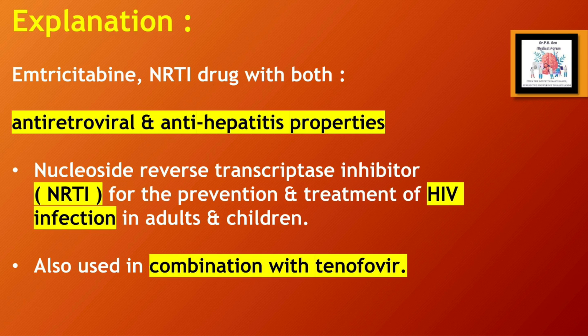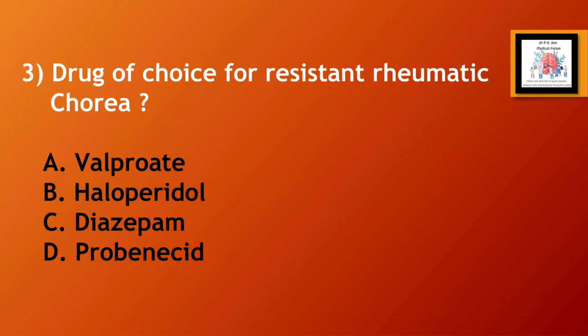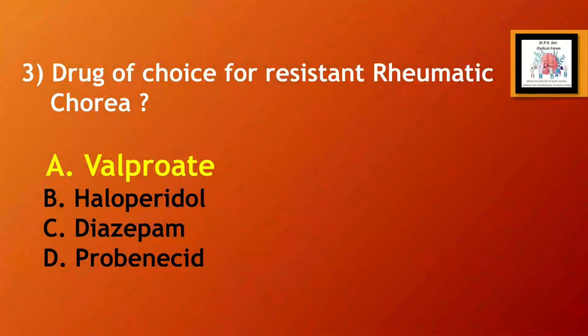Question number 3: drug of choice for resistant rheumatic chorea is — Option A, valproate; Option B, haloperidol; Option C, diazepam; Option D, probenecid. And the correct answer is Option A, valproate.